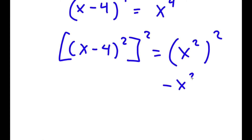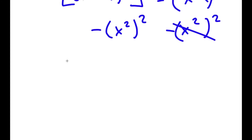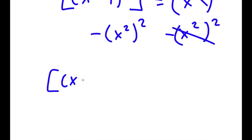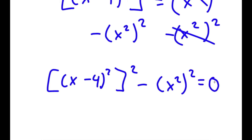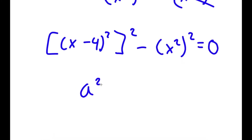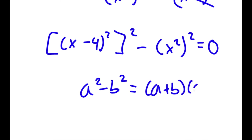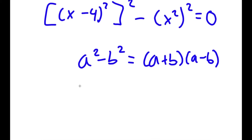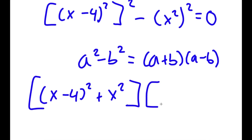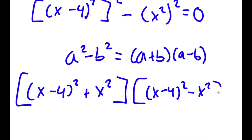Now I'm going to subtract both sides by x squared to the power of 2, so these two cancel out. Now I have x minus 4 squared to the power of 2 minus x squared to the power of 2 is equal to 0. If I have something in the form a squared minus b squared, this equals a plus b times a minus b. So this equals x minus 4 squared plus x squared times x minus 4 squared minus x squared equals 0.